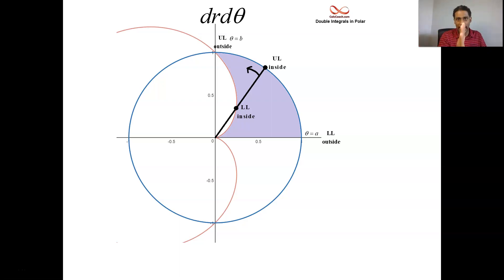dr d theta works the following way. Remember how we have dy dx and dx dy? Well, we have dr d theta as well. We put circles on the ends. Remember what they're for. That'll help us figure out what the upper limit inside is and the lower limit inside is. And then we swing.